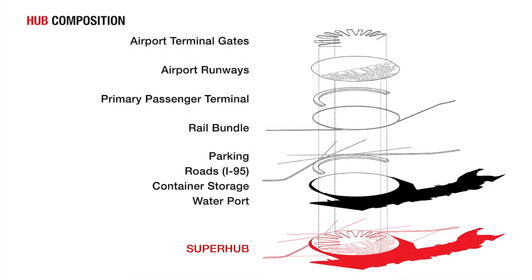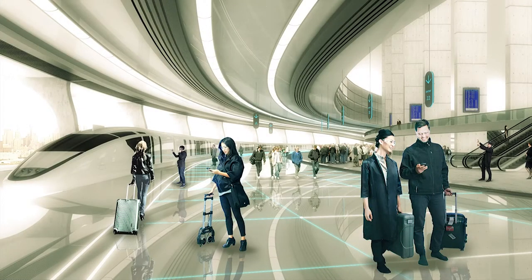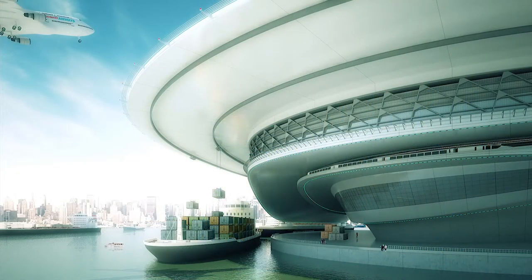A schematic diagram illustrates the composition of a superhub, which includes an airport, passenger terminal, rail bundle, parking, roads, and a port. Architects' renderings depict the sleek, futuristic terminal.